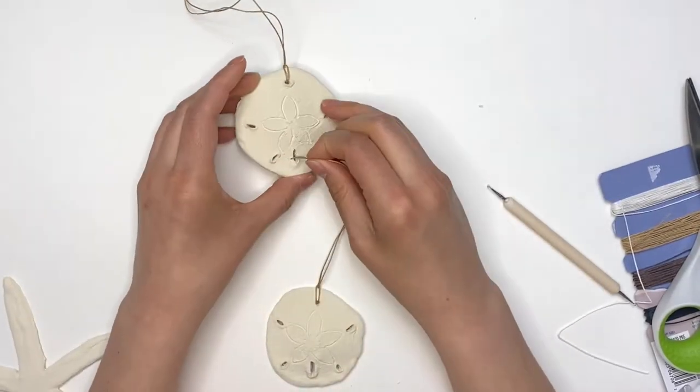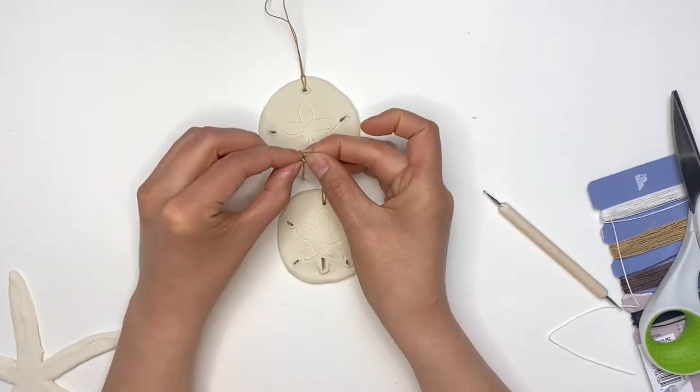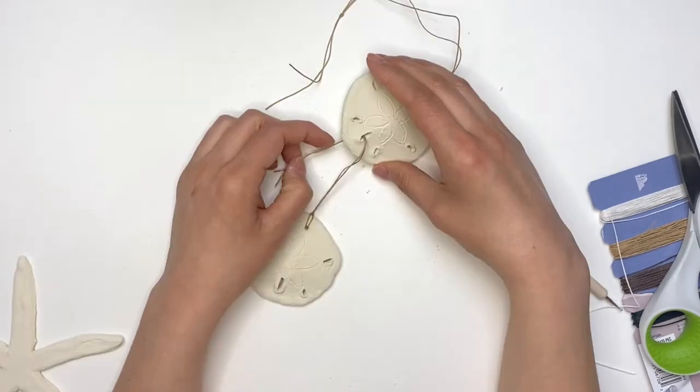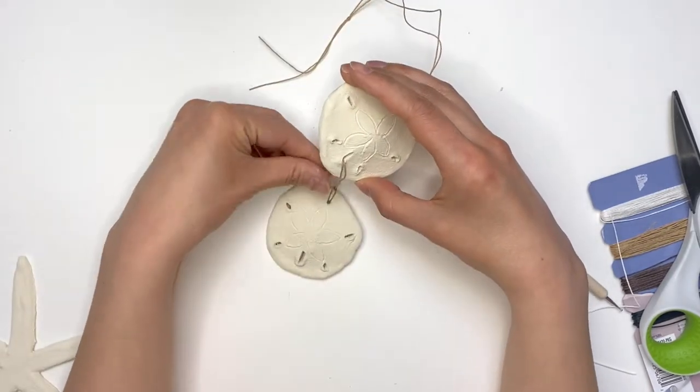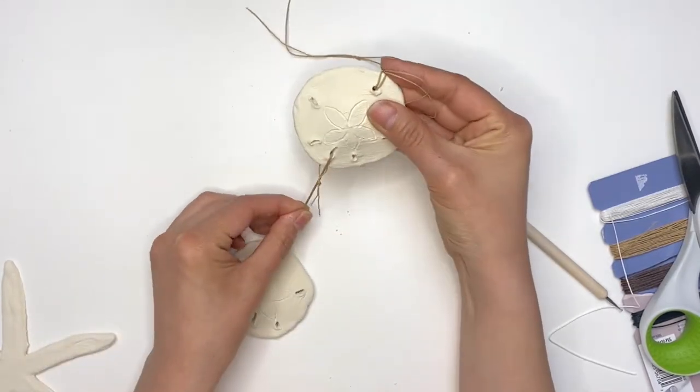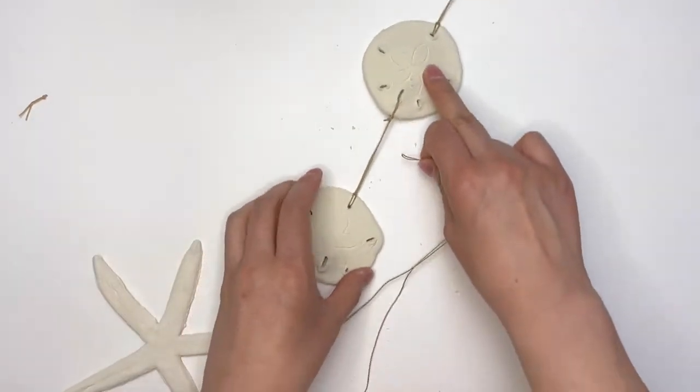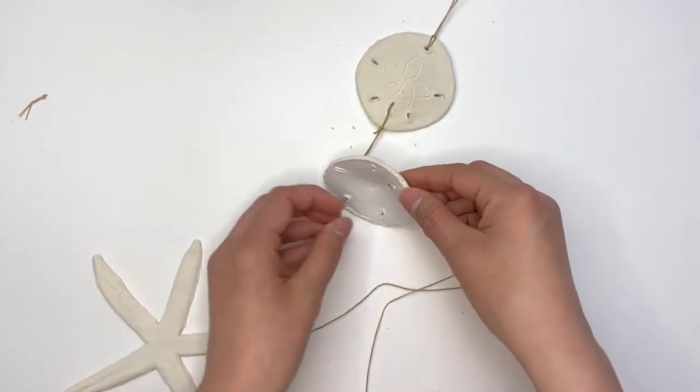Then I grabbed the ends of the cord and I put them through the first sand dollar, and then I made a knot on the back. And then I put my fingers through that loop I created with that knot and I put my second sand dollar through it and pulled.